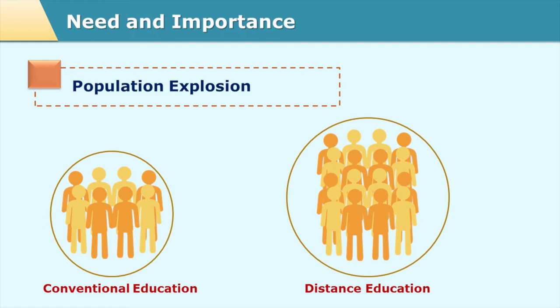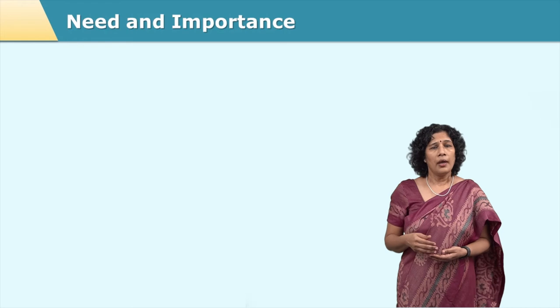It handles a very large number of students at a time. For example, if a conventional university handles about 50,000 students at a time, a parallel open university handles students to the tune of 6 or 7 lakhs at a time. So about 10 to 12 times the learners get educated within the same duration of time. Thus, this education is the right answer for handling the large population as far as their education is concerned.